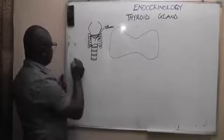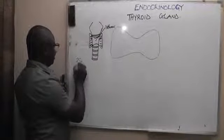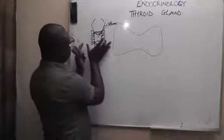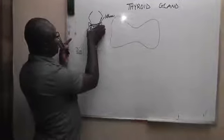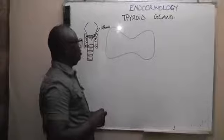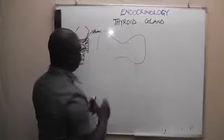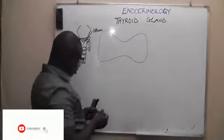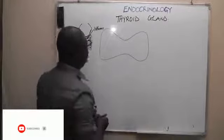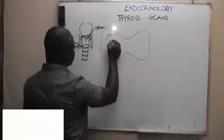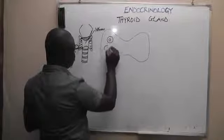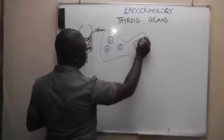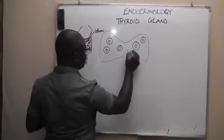The thyroid gland weighs about 25 grams, and as noted, it is highly vascular. Now looking at the structure of this gland, it is made up of a lot of cells. One important group of cells you should never forget are the cuboidal epithelial cells. These cells are called follicular cells.